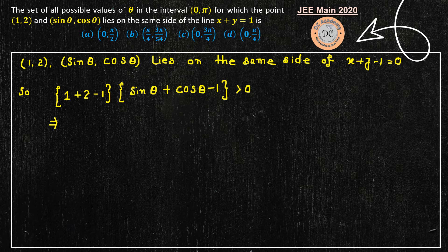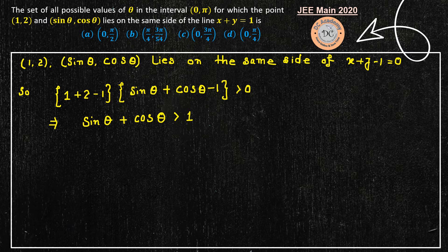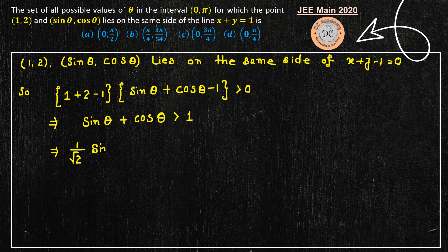Since the first factor is a positive constant it can be cancelled. Therefore we require sin theta plus cos theta to be greater than 1. To analyze this combined trigonometric expression, we multiply both sides by 1 over root 2, giving (1/√2) sin theta plus (1/√2) cos theta greater than 1 over root 2.